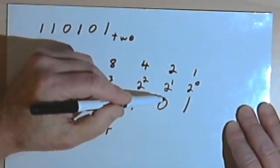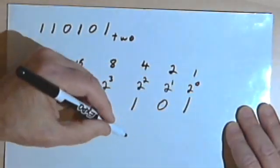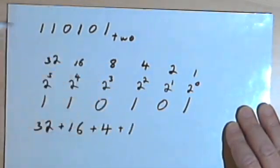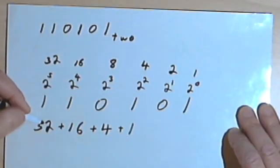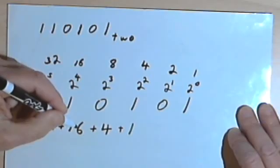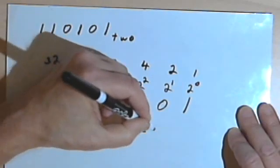I've got a 0 in the 2 to the 1st column, so there's nothing there. And I've got a 1 in the 2 to the 0 column, so I'll have a 1. Now I just have to add these numbers up. 32 plus 16 is 48, plus 4 is 52, plus 1 more is 53.